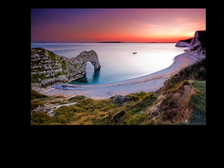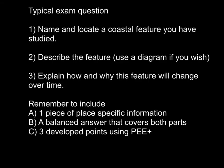Now, once you understand those key features, by looking at this picture you can actually see what Durdle Door is going to look like in the future. Because in the middle distance, what you can see is actually a stump. It's quite possible that in a few hundred years, that may be all that remains of Durdle Door. So, we've looked at the formation of Durdle Door, the key characteristics, the future of Durdle Door, and where it's located.